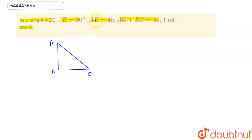We have given AB equal to 40, and AC plus BC, that is this plus this, is equal to 80.